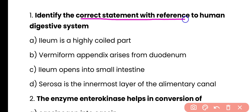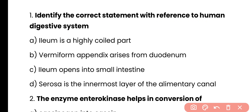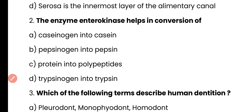Identify the correct statement with reference to the human digestive system. Option A: Ilium is a highly coiled part. Option B: Vermiform appendix arises from the duodenum. Option C: Ilium opens into small intestine. Option D: Serosa is the innermost layer of alimentary canal. Correct answer is option A — Ilium is a highly coiled part of the human digestive tract.